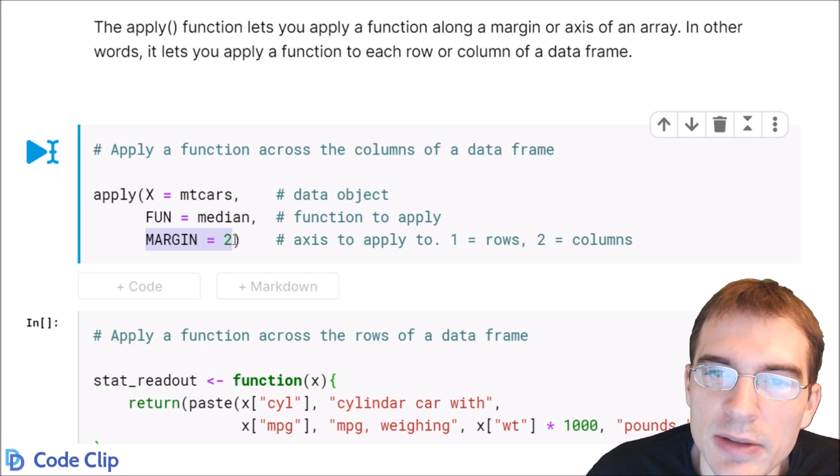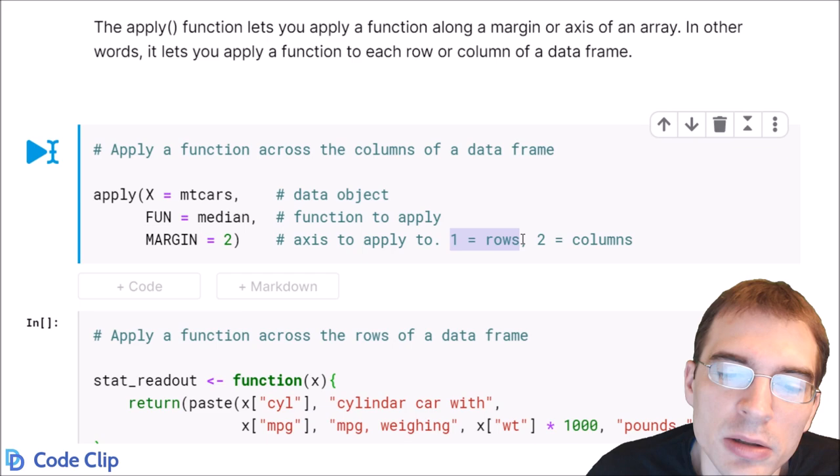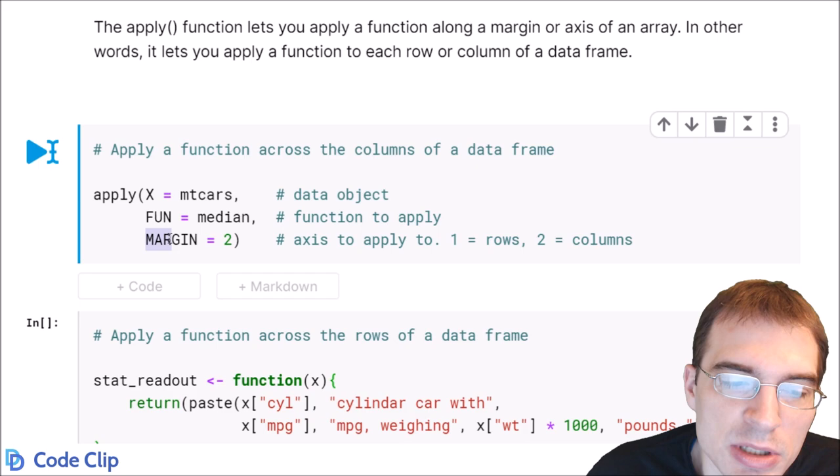And the final argument is the margin. And this selects which dimension of the multi-dimensional data object you are going to apply the function across. In the case of a data frame, setting the margin equal to one will apply your function across the rows of the data frame. And setting the margin equal to two will apply the function across the columns.